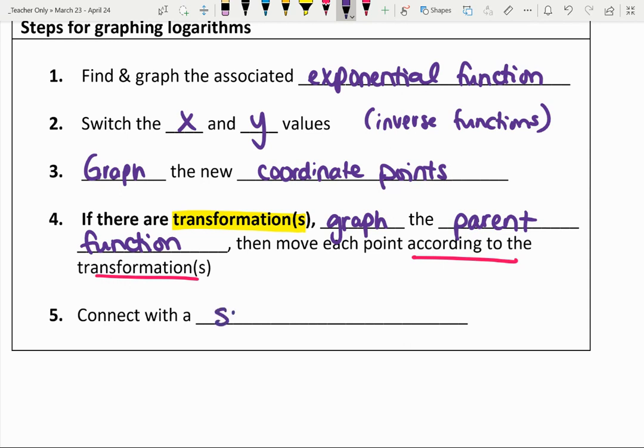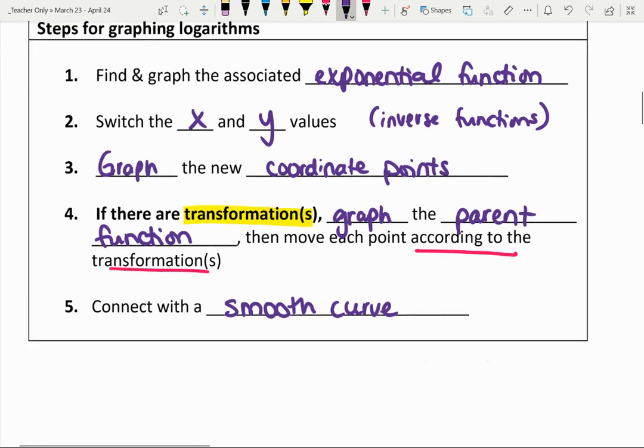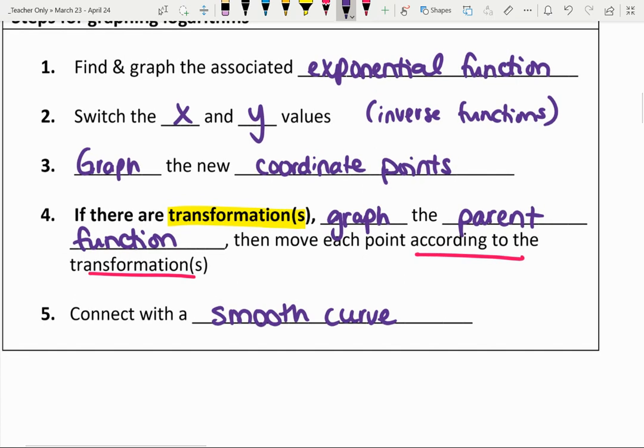And then last but not least, we're going to finish the graph by connecting with a smooth curve. Remember, these graphs are continuous. It's not enough to just have the coordinate points. We also need the curve that's associated with it. So we're going to do a couple examples together just to see how all of these things connect. And then I'll let you practice on your own.